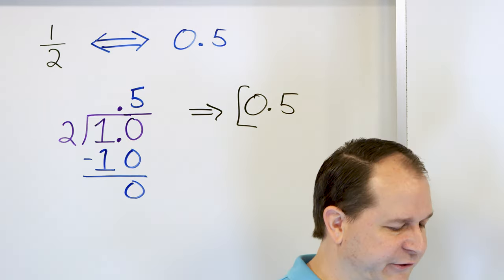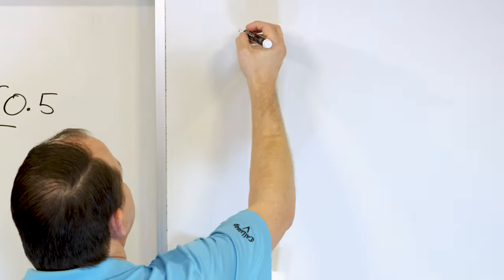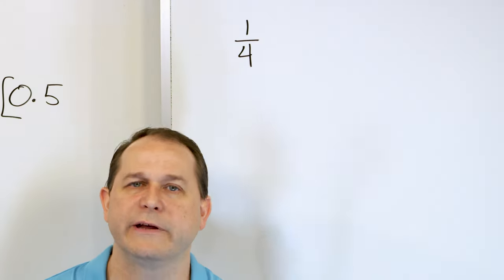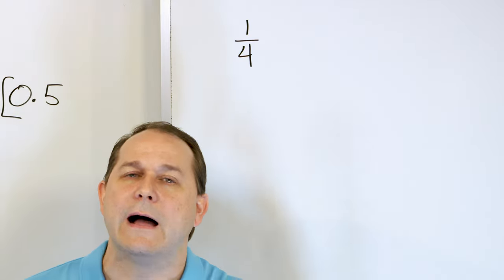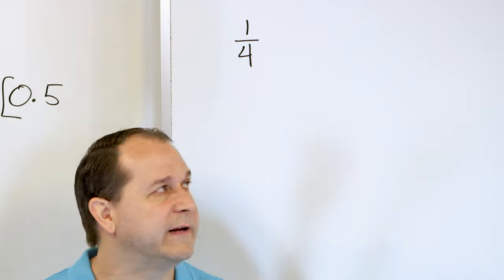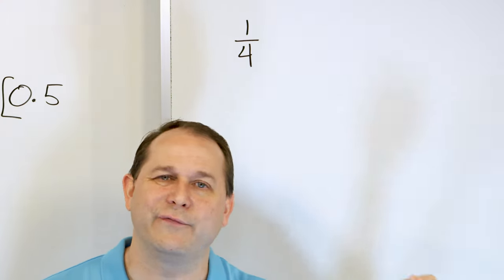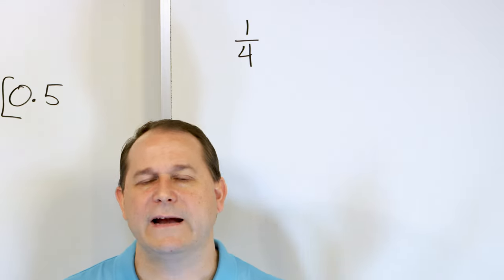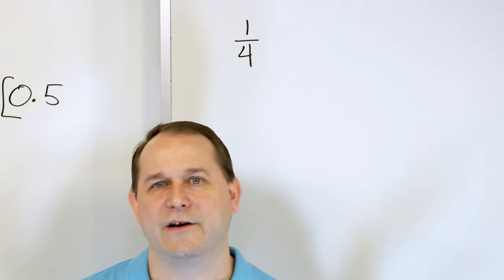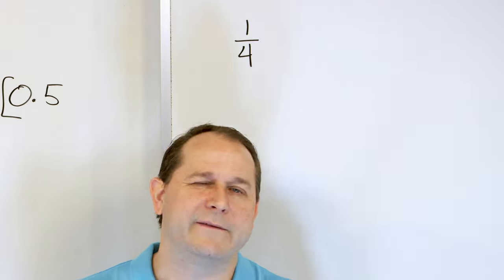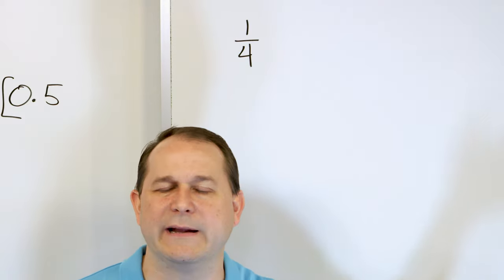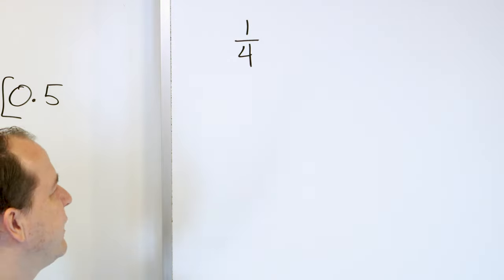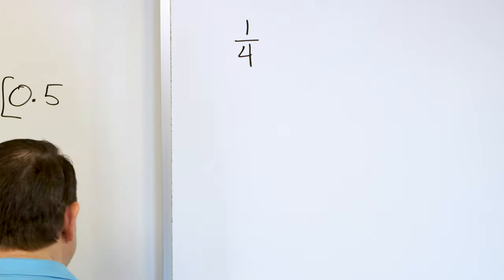Now let me ask you about another fraction — also very familiar: the fraction one fourth. Some of you may know its decimal equivalent and some may not. The decimal equivalent of one fourth is 0.25. You can also think of it as 25 cents in a dollar, which is 100 cents — so 25 cents is 0.25. Let's calculate this and verify that that is the case.